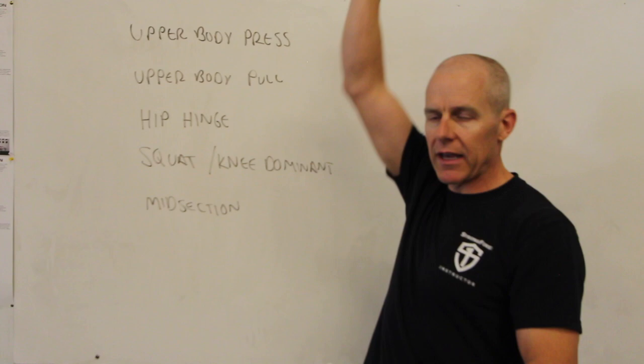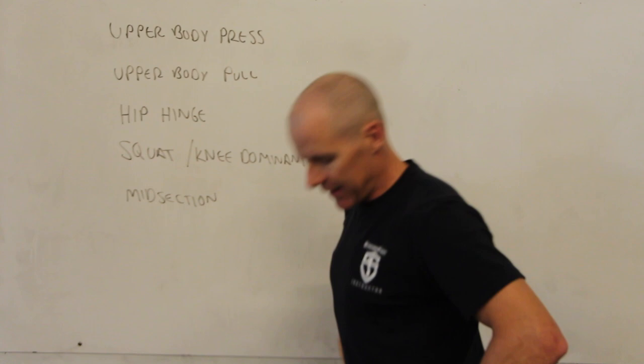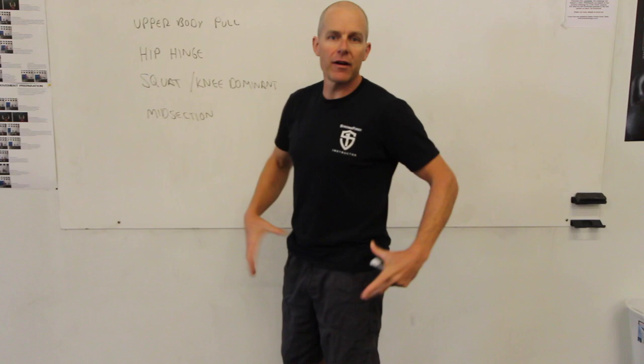We do upper body pull where we're going to pull the loads toward us, like in a rowing motion or even like a pull-up motion. We do hip hinging, and that's where I'm going to be straightening my hips under load. We'll do that usually in the form of a variation of the deadlift.